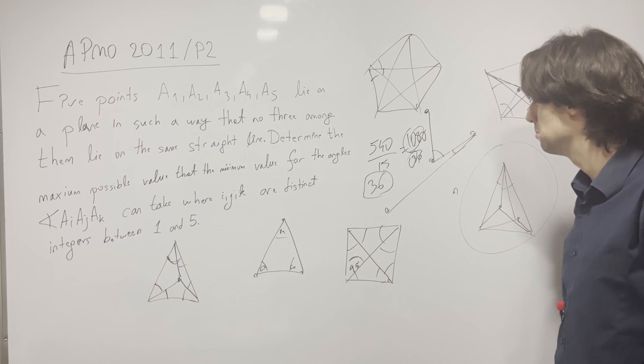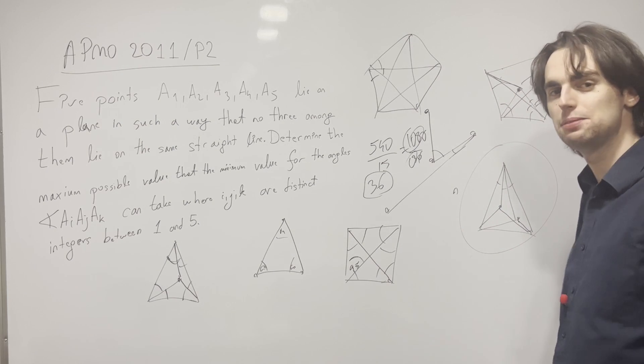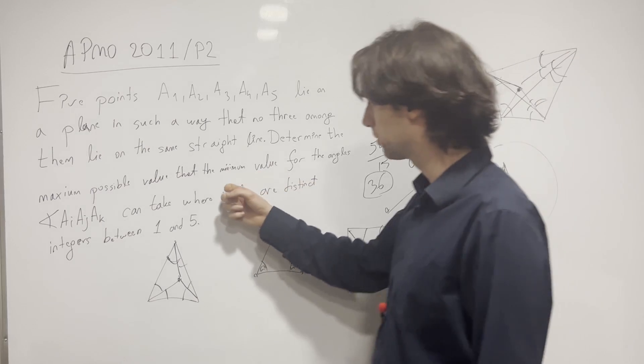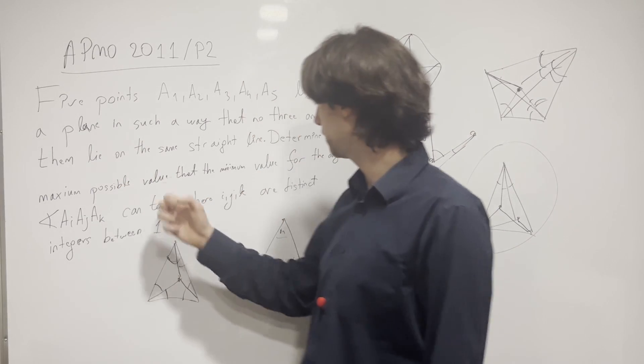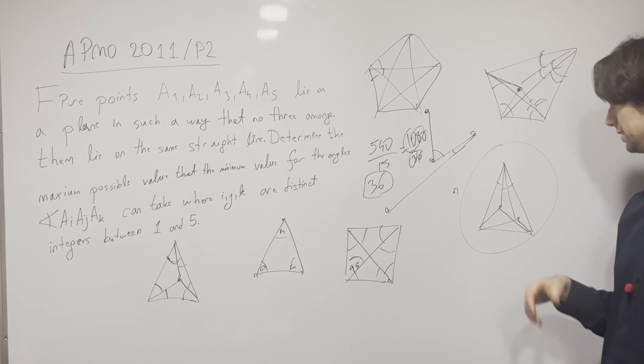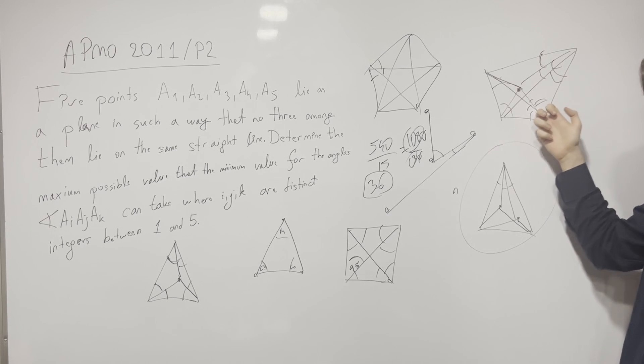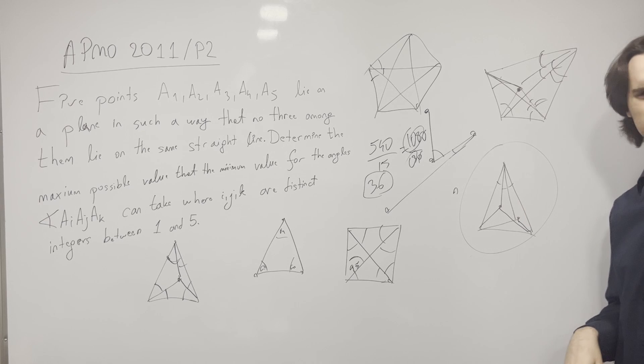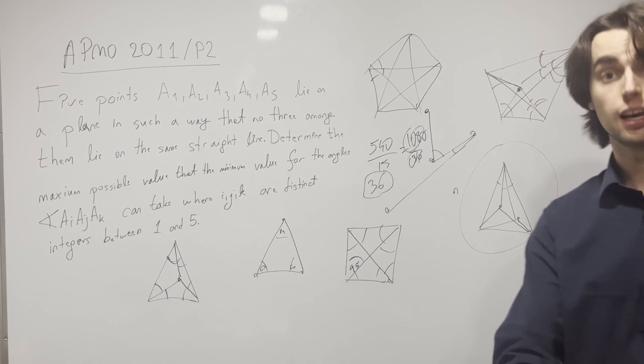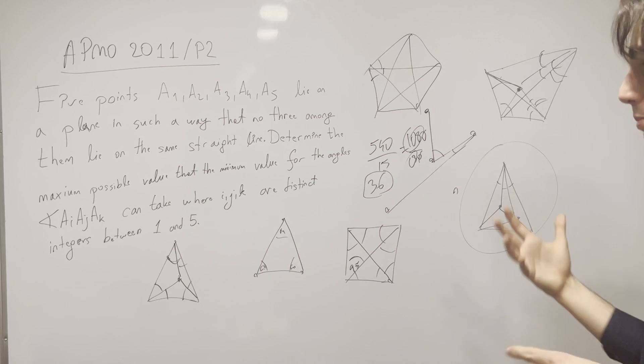And so in this case by case analysis, we've shown that the biggest value, the maximum possible value that the minimum value of any angle can get is going to be 36. Here it's at most 30. And in this case, it's at most 30. In this case, it's at most 20. And then this is how we'd prove the problem.